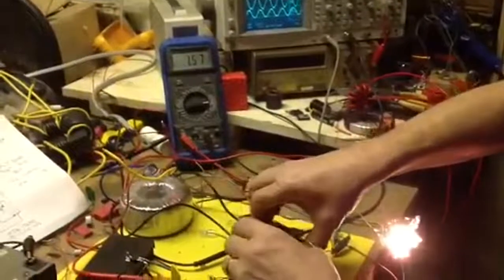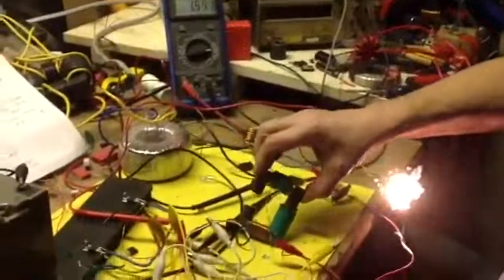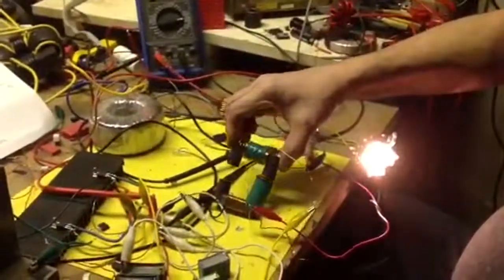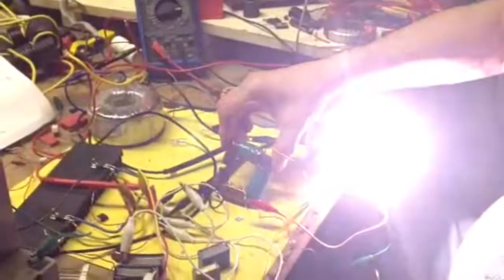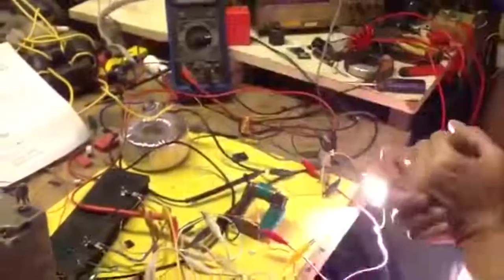375 volts across the primary now. So that's not Royer behavior, is it? Okay. I think we'll call it there. I don't know what you're going to make of this, frankly. I don't know what to make of it. Anyway, thank you for watching and I hope you enjoyed it. Cheers.